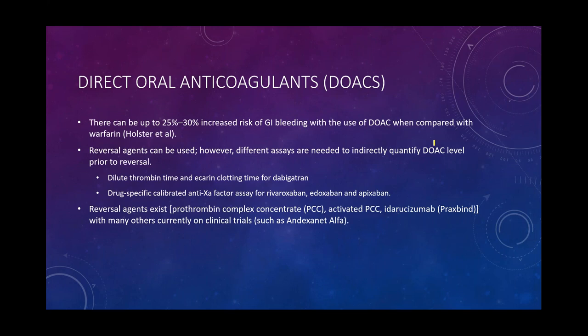When managing patients on direct oral anticoagulants (DOACs), keep in mind they carry a 25-30% increased risk of GI bleeding. Lab values are often needed to indirectly quantify DOAC levels before reversal. Reversal agents include PCC, activated PCC, and idarucizumab, with others such as andexanet alfa undergoing clinical trials.